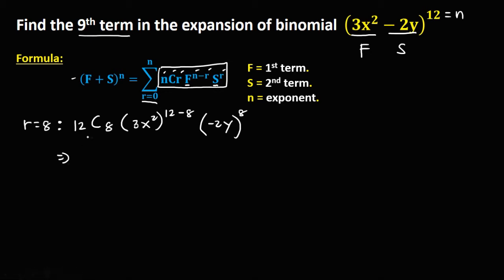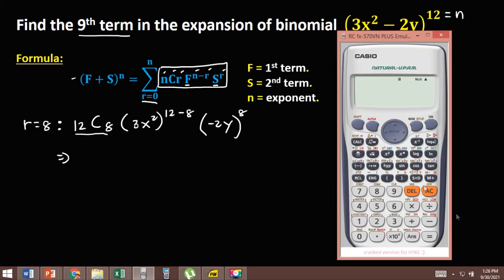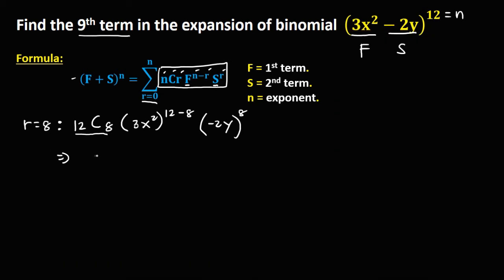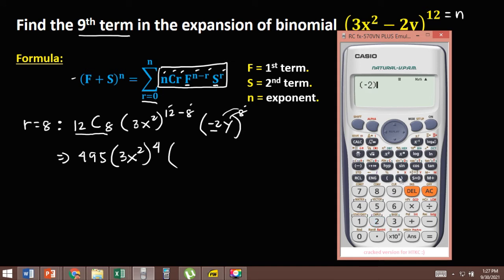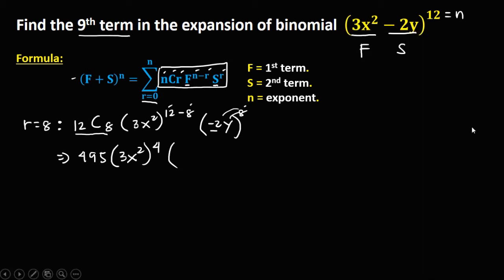Simplify. 12 choose 8, using a calculator, equals 495. Then times 3x squared to the power 4 — since 12 minus 8 is 4. Distribute the exponent: negative 2 to the power 8 equals positive 256. Then y to the power 8.